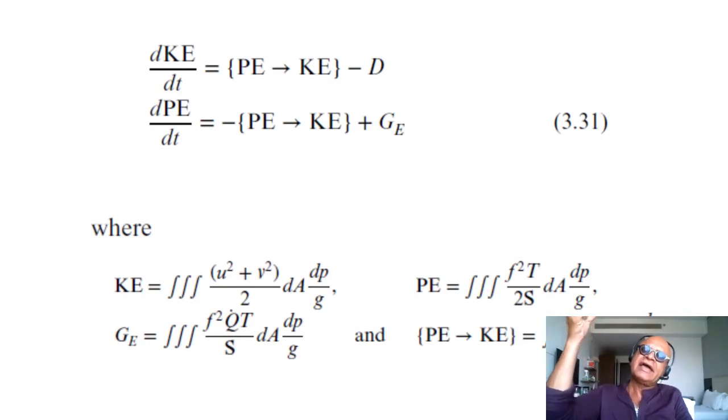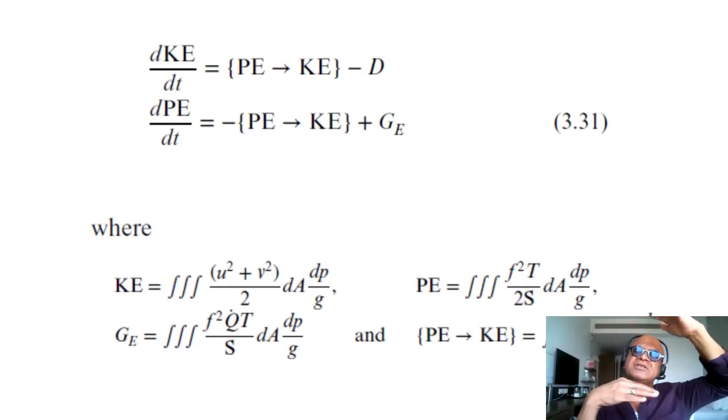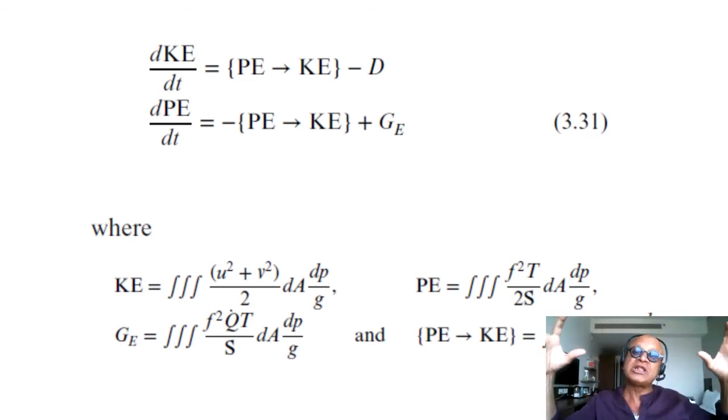When you have convection and condensation and latent heat is released, you're creating buoyancy and lifting the center of mass of the air column, which is essentially potential energy. This gives you an idea of how tropical systems can generate potential energy. The question is whether it will immediately get converted to kinetic energy—giving weak motions and barotropic structure—or if potential energy can be built up, stored, and then released into large-scale motions. Kinetic energy is the integral over the whole volume of (u² + v²)/2.